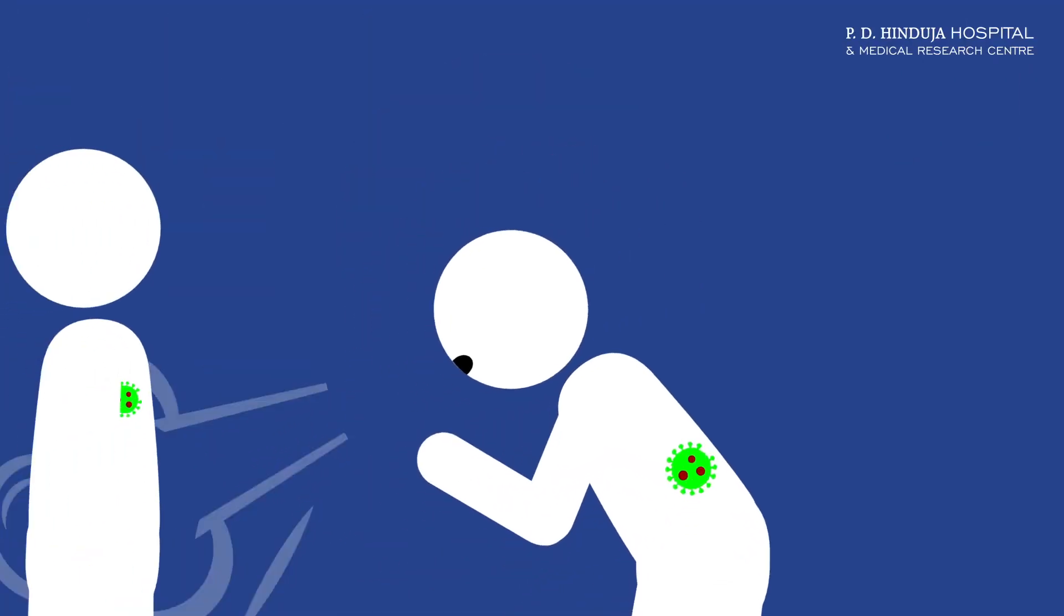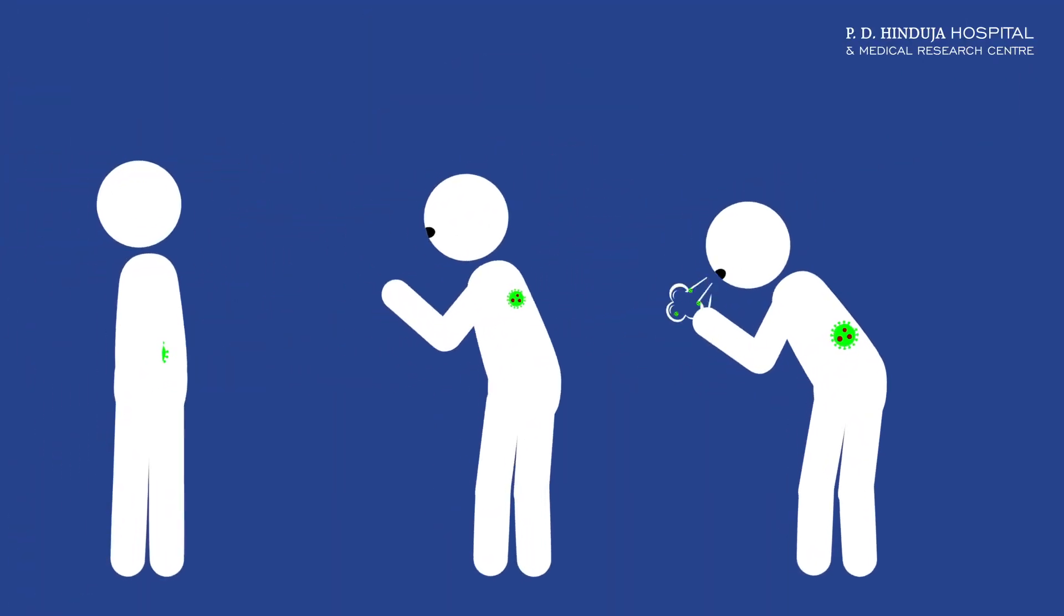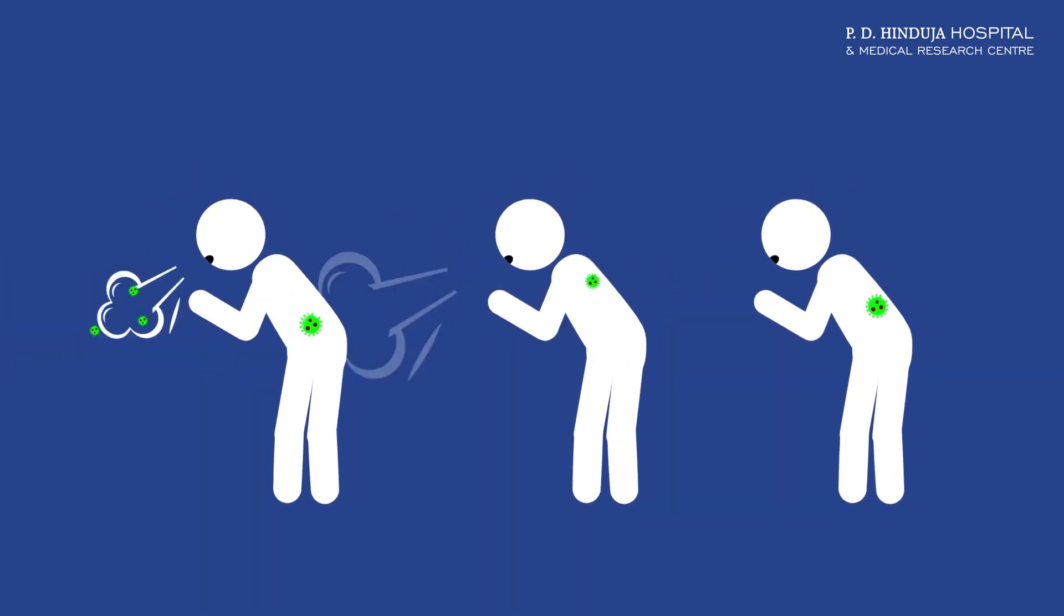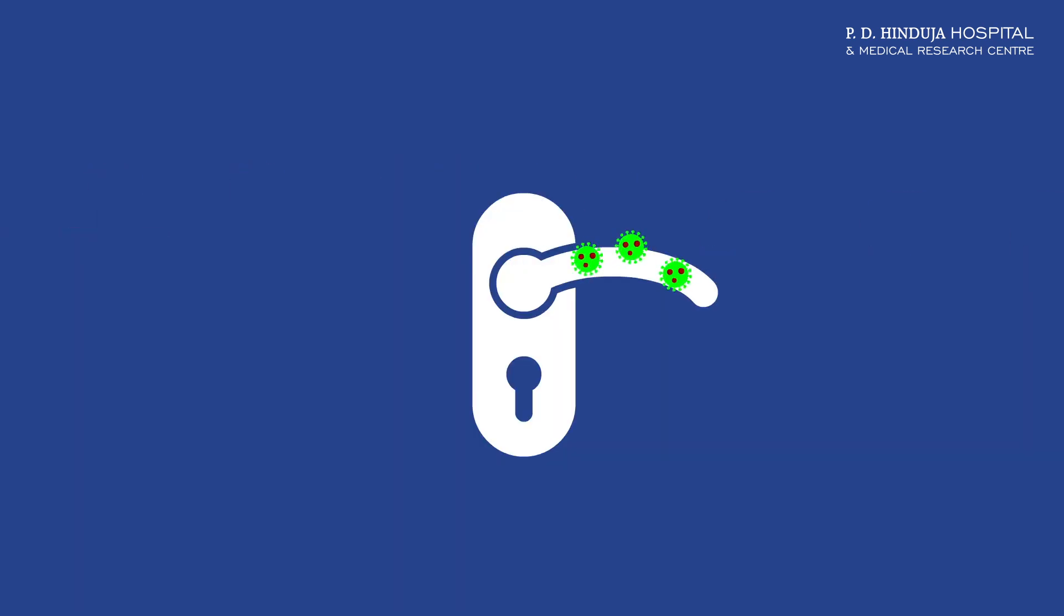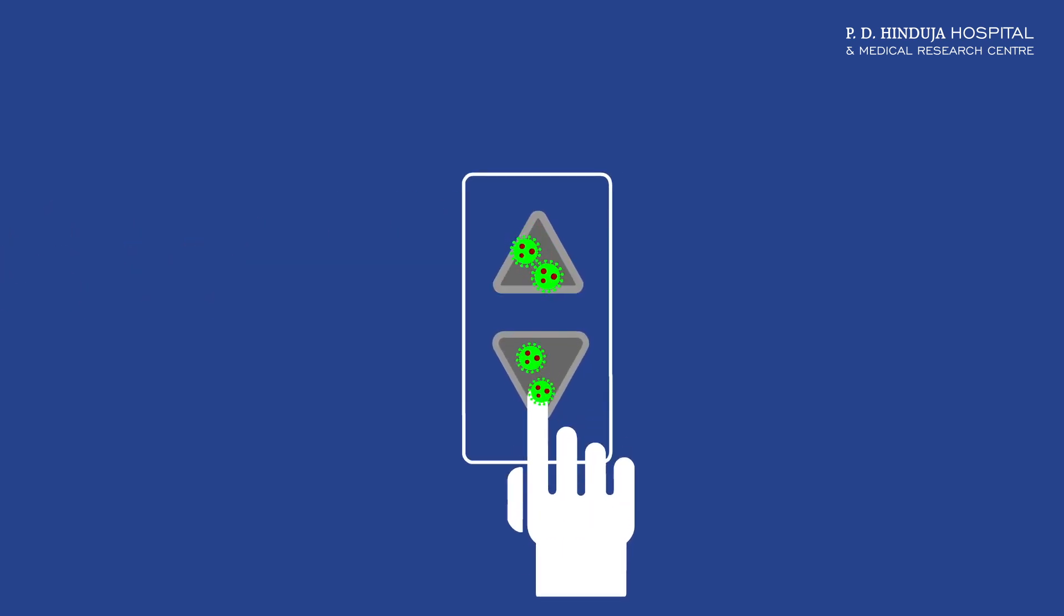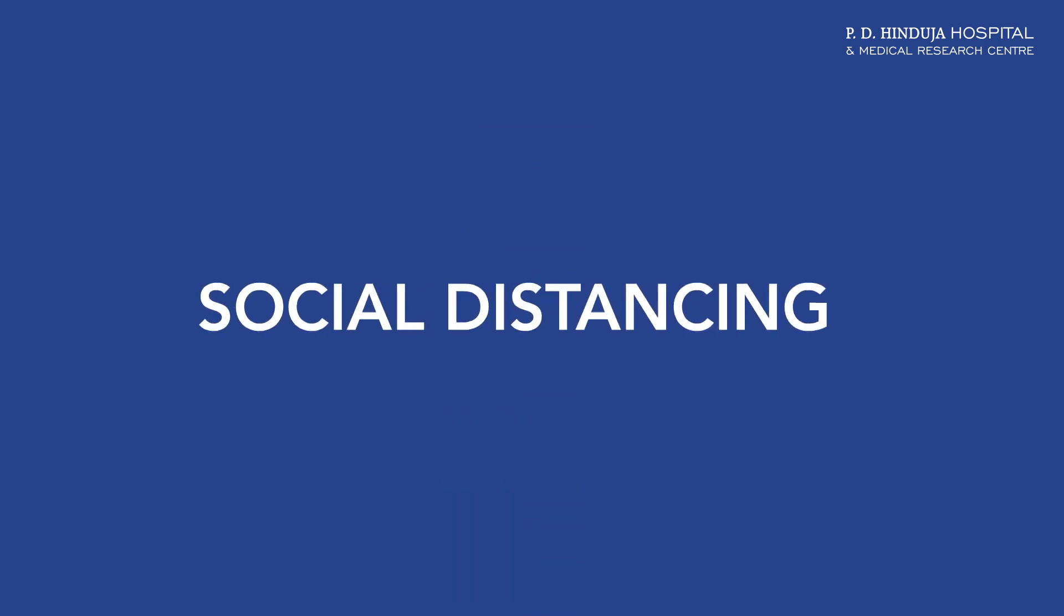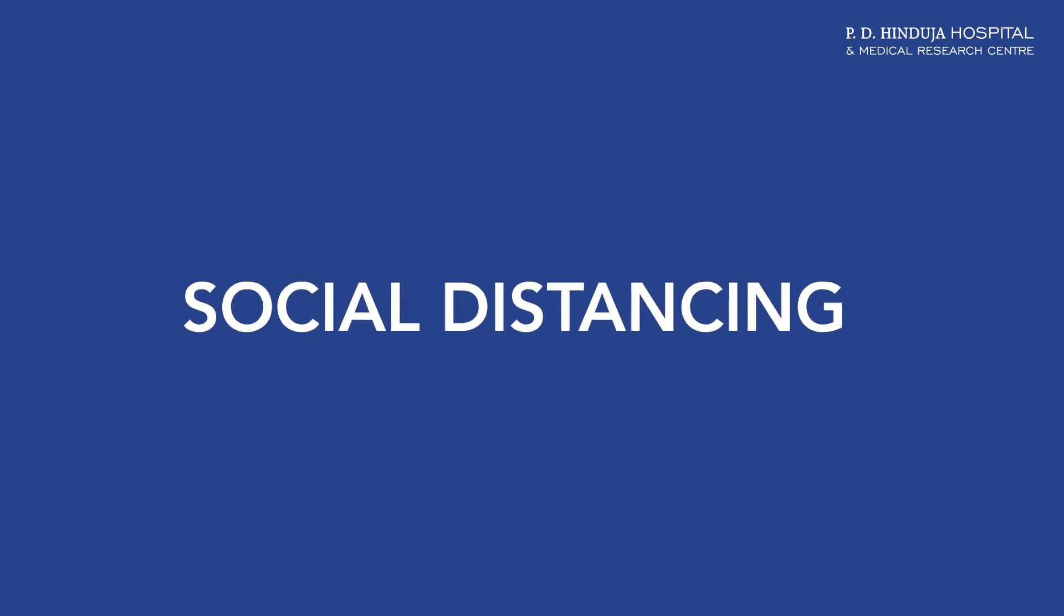The coronavirus spreads from human to human via infected droplets expelled while coughing, sneezing and exhaling. Close contact with an infected person or with contaminated objects like door handles and elevator buttons can lead to transmission of infection. This is why social distancing is important.